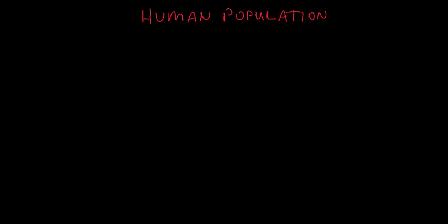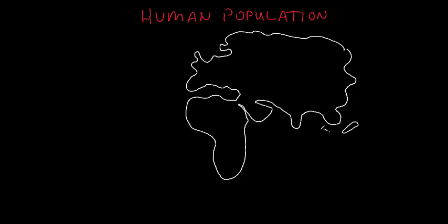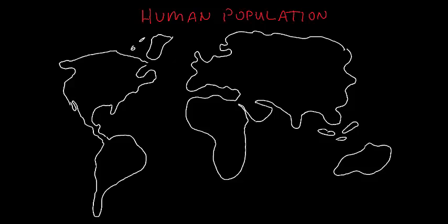Human population. Homo sapiens began in Africa about 200,000 years ago. Our population may have been as low as 100,000 based on genetic differences found in modern humans.